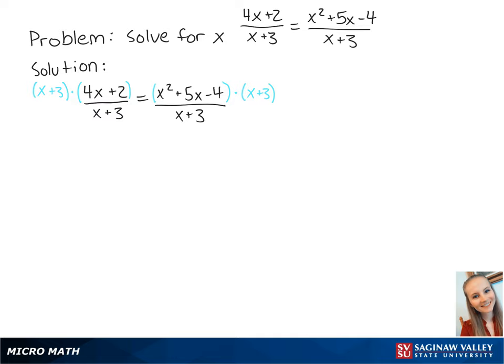So we're going to multiply both sides by x plus 3, which cancels out on the left side and on the right side, leaving us with 4x plus 2 equals x squared plus 5x minus 4.